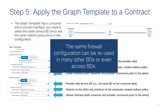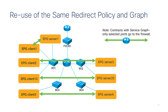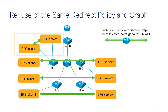The same firewall configuration can be used in many other bridge domains or even across bridge domains. By using the one-arm configuration, you can easily reuse the same graph and the same redirect policy for contracts — not just the ones within the same BD, but even between EPGs of different bridge domains. You can just use the same graph again with the same redirect policy.